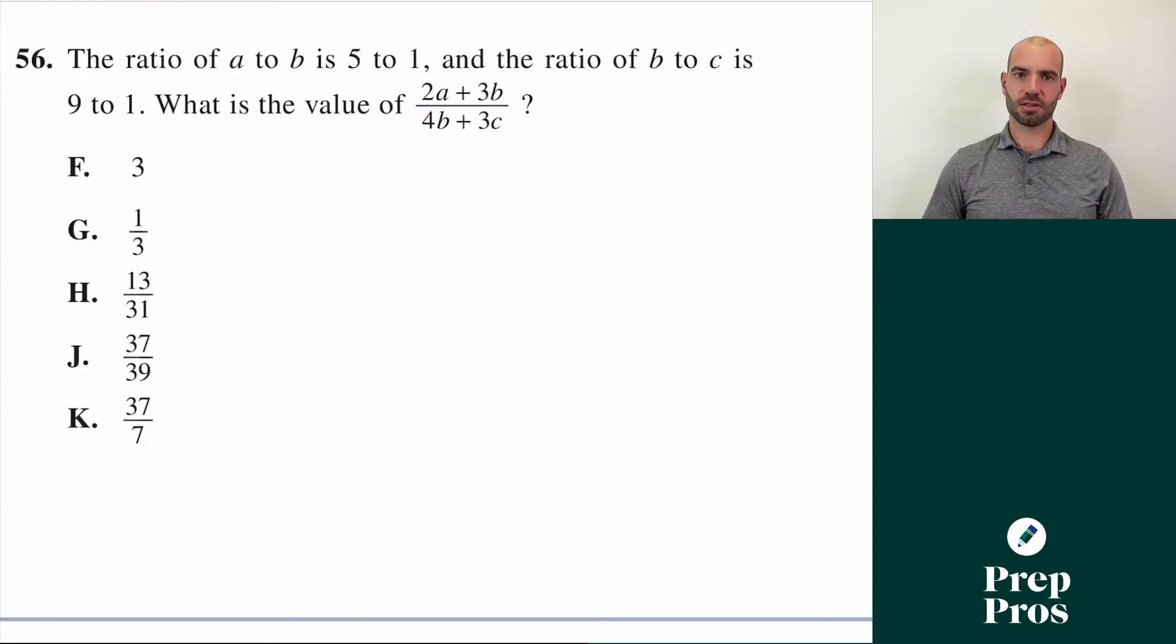Coming into the fourth most difficult question is question 56 here. It says the ratio of A to B is five to one, B to C is nine to one. What is the value of two A plus three B over four B plus three C? Now the trick here is, we can think of our ratio A to B and B to C, we want the numbers to in some way all match.